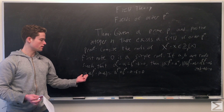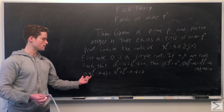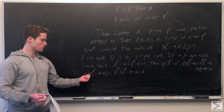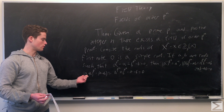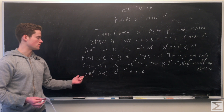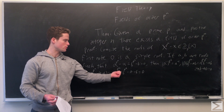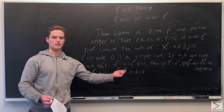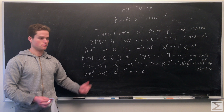For addition: (a + b)^(p^n) — if you expand this out, you'll note the binomial coefficients are all divisible by p except for the leading terms, so this simplifies to a^(p^n) + b^(p^n), which equals a + b. Therefore (a + b)^(p^n) minus (a + b) equals zero, so a plus b is also a root.